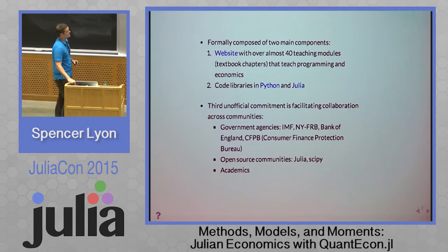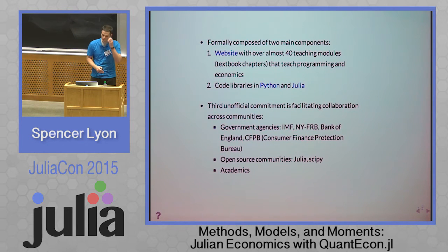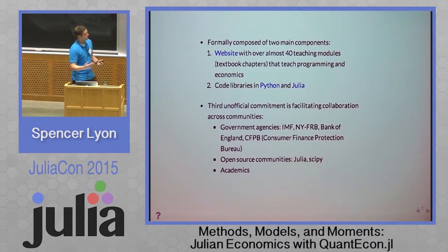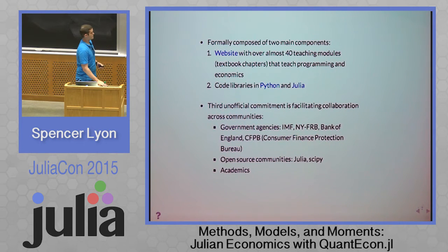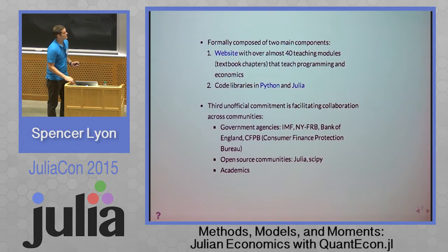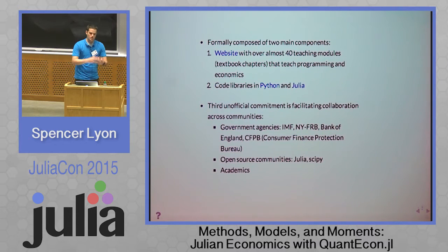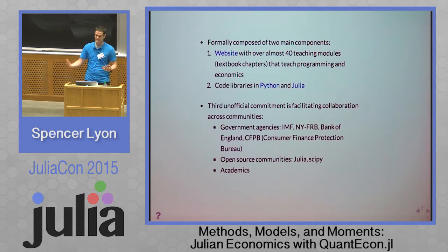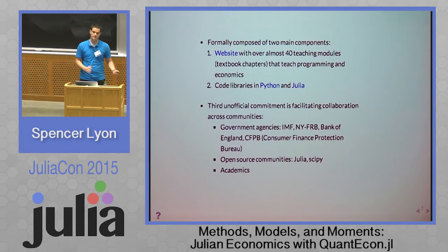A third unofficial commitment we've landed on is facilitating collaboration across different communities. We're working with various government agencies — we've worked with the IMF, the New York Fed, the Bank of England, and the Consumer Finance Protection Bureau. We're also working actively with the Julia community, the SciPy community, and other academics involved in economic research. One exciting project: we're helping the New York Federal Reserve translate one of their large forecasting models from MATLAB to Julia. It'll be open source and posted on GitHub when complete, but we're currently in the beginning stages of that transition.